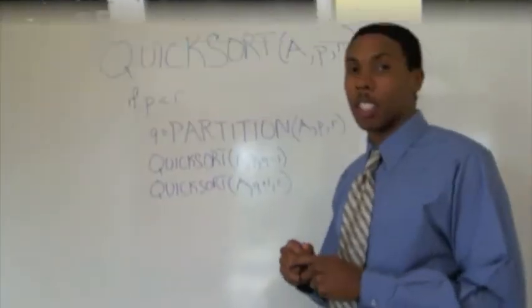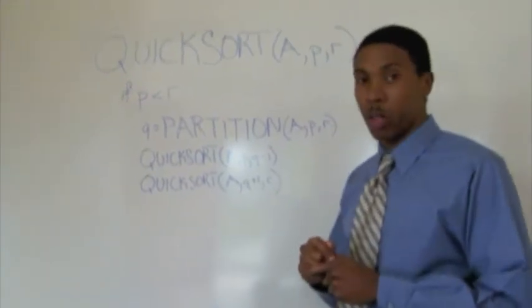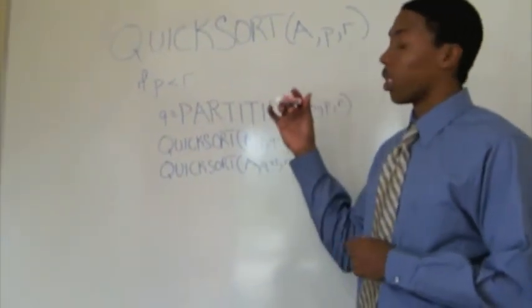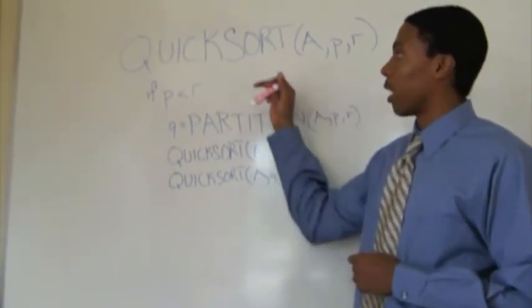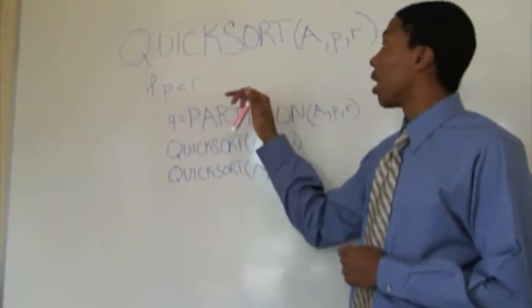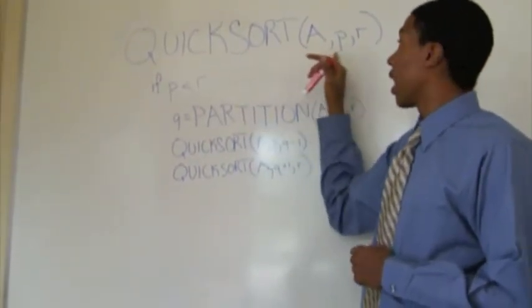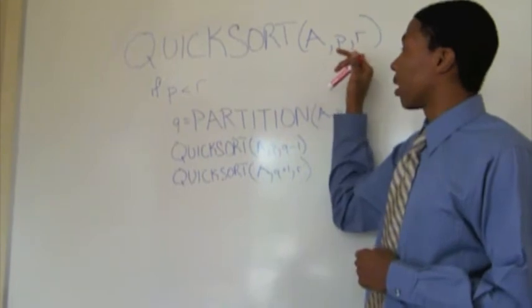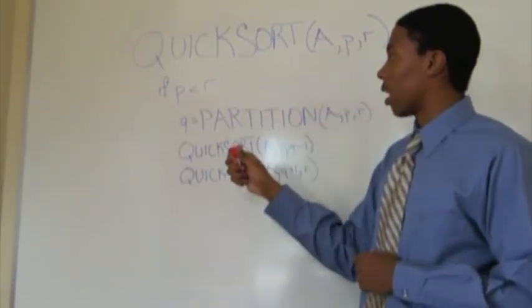The best case running time for QuickSort is theta n log. Now I'm here to speak about the two parts of a QuickSort function. First off, the partitioning part, and then the QuickSort itself. Within the QuickSort method, we're passing through the array and the two elements of the array, the p and r.